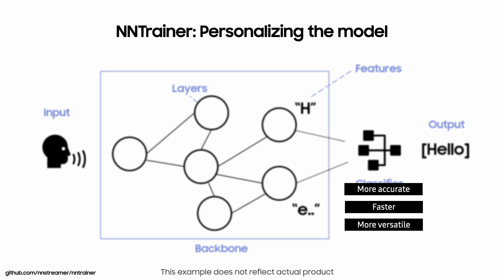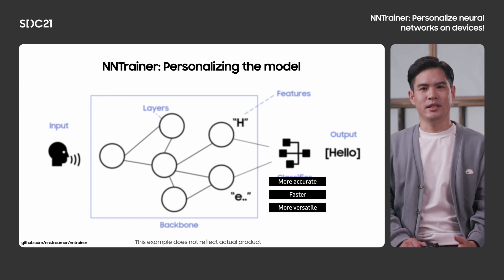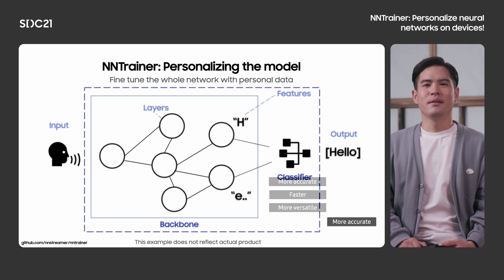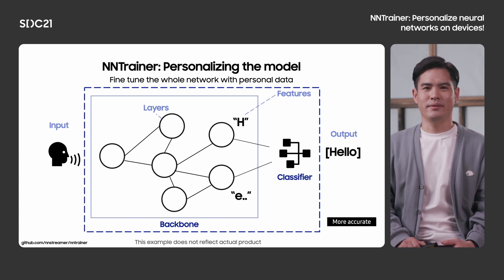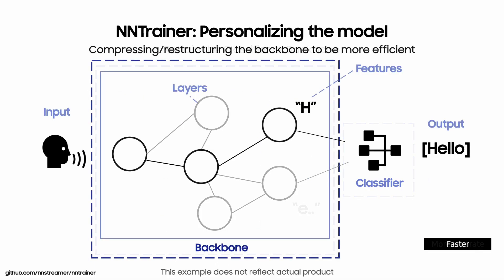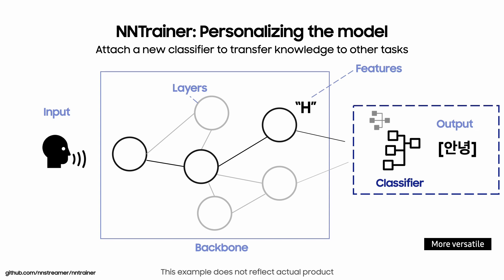NN-Trainer can increase the accuracy for user data, make the model faster, and adapt it to different tasks. NN-Trainer can fine-tune the whole model with given user data, just as other frameworks do. But training the whole model is quite heavy, so instead of training the whole model, you might want to train only part of it. Also, you can attach a new classifier to transfer knowledge to other tasks — for example, you can adapt to a different set of languages or incremental language models.